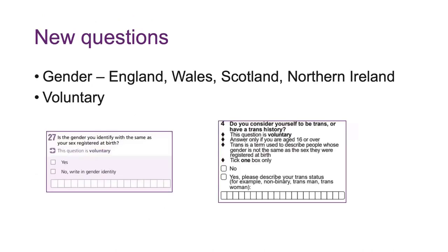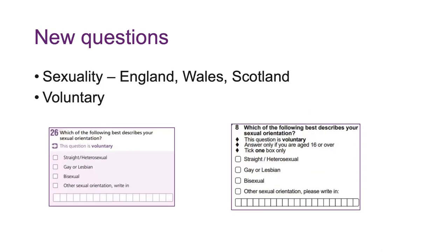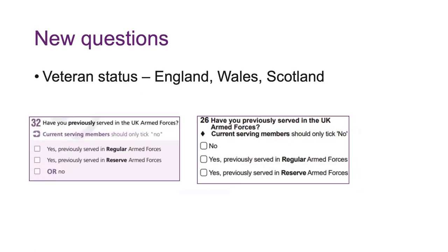There were new questions in 2021. There's a question on gender in England, Wales, Scotland, and Northern Ireland — it was voluntary and we haven't seen any data from that yet, but we're really looking forward to it. The question was slightly different between England/Wales and Scotland. The question on sexuality wasn't asked in Northern Ireland but was asked in England, Wales, and Scotland, again worded slightly differently. Veteran status — people who have served but are no longer in the armed forces — wasn't asked in Northern Ireland as it's a very sensitive question there.